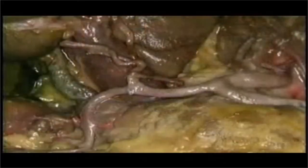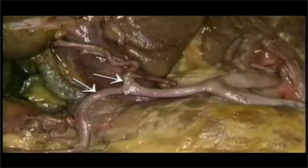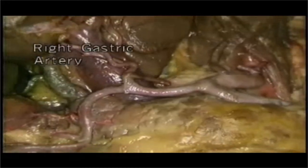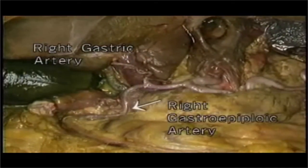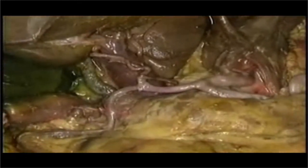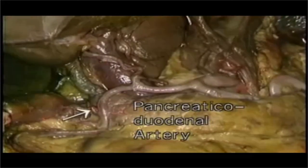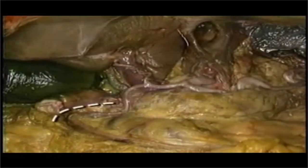We'll return to the division of the common hepatic into the hepatic and gastroduodenal arteries. From near this division, two branches to the stomach arise: the right gastric, which usually arises from the hepatic, and the right gastroepiploic, which arises from the gastroduodenal. After giving off the right gastroepiploic, the gastroduodenal artery continues as the pancreaticoduodenal artery. It runs downward behind the duodenum, supplying it and the head of the pancreas.